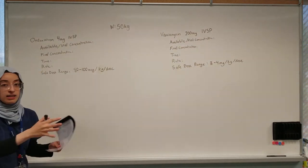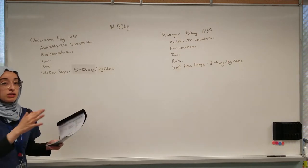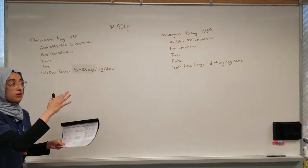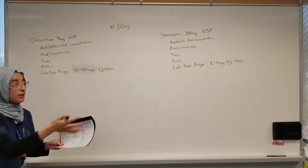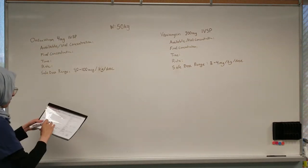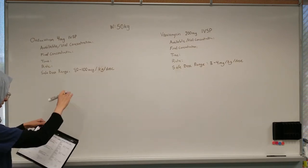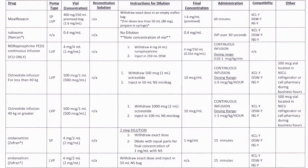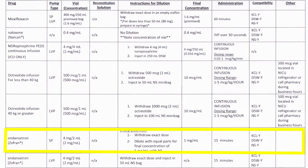I do want to give a warning that these numbers are just made up, so they might not be accurate to orders you might see in real life. We're going to find our medication in the book — there are multiple entries of the same medication, this is Zofran. Because we're giving it through a syringe pump, we need to make sure we're looking at the syringe pump section, so under pump type we're looking for SP for syringe pump.